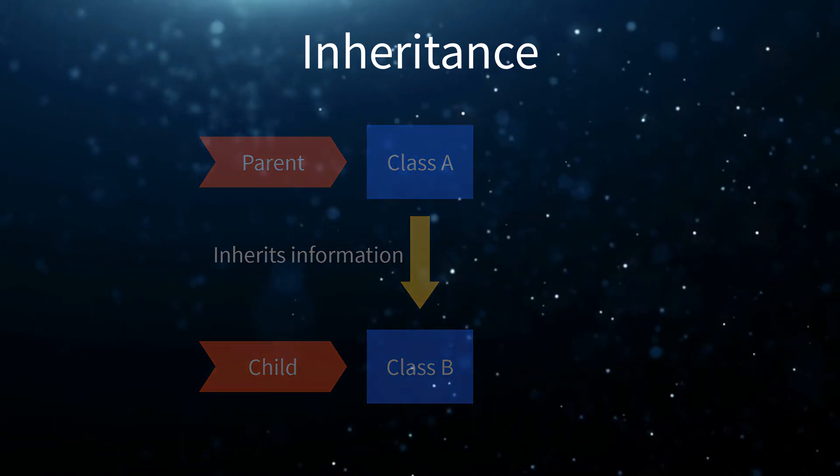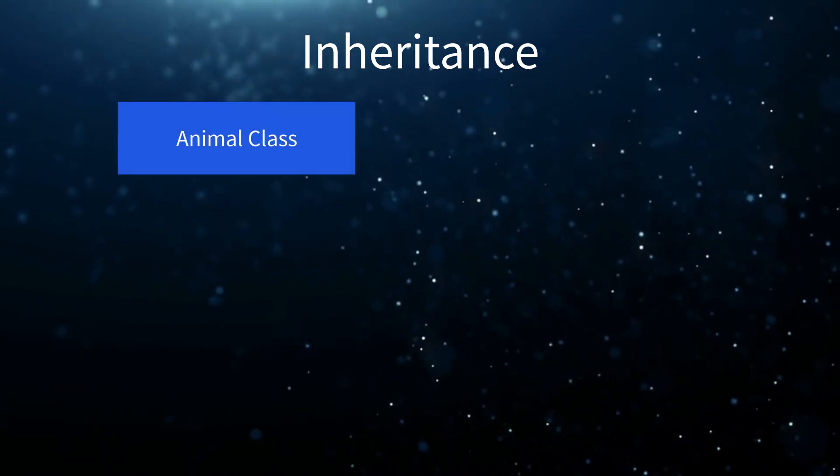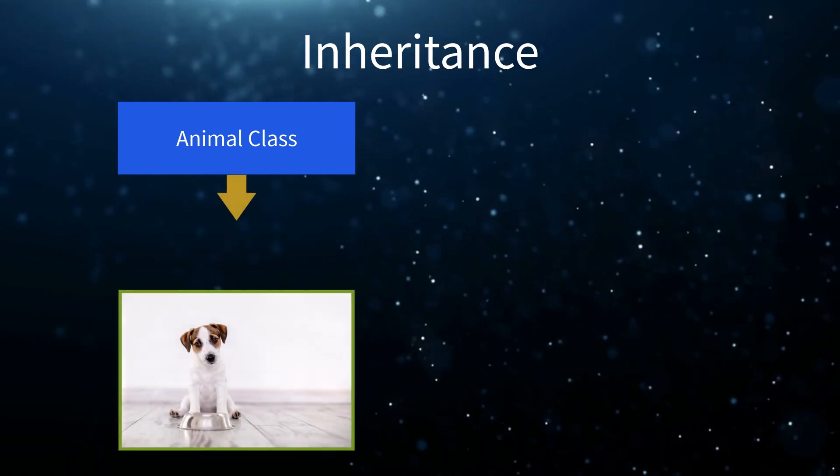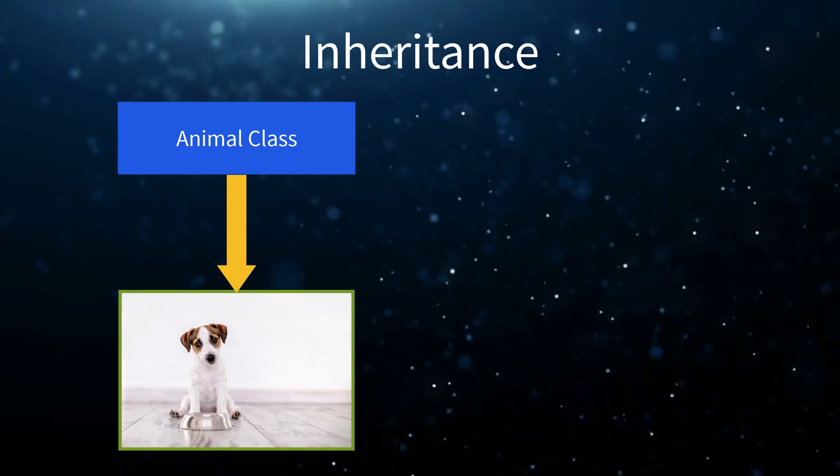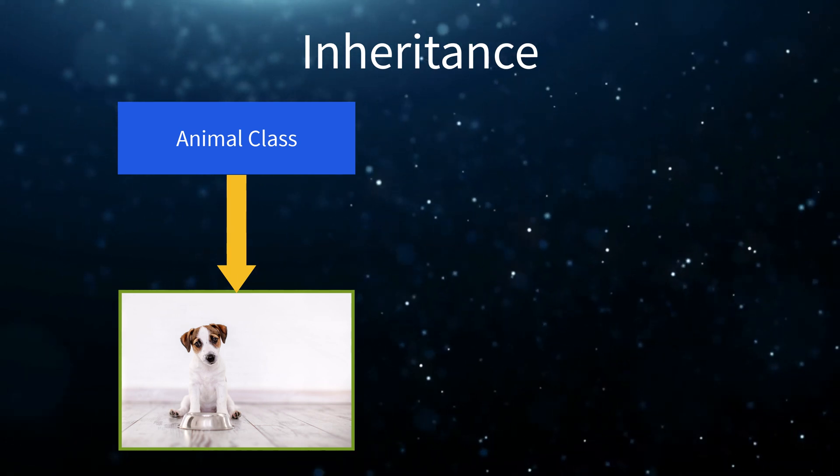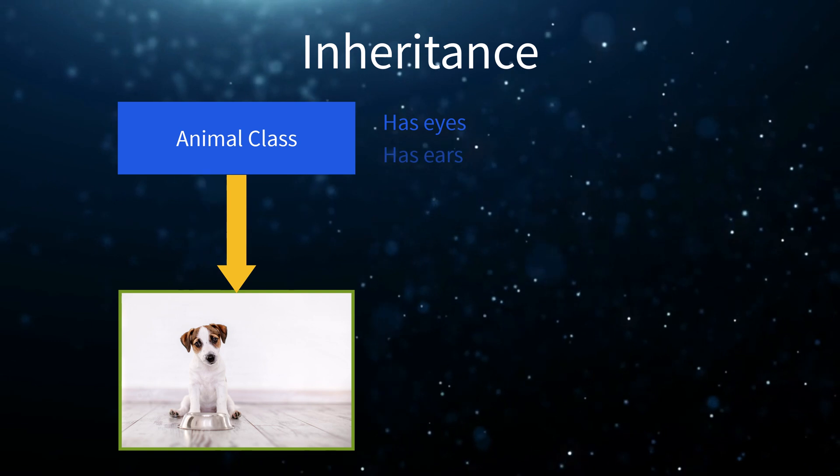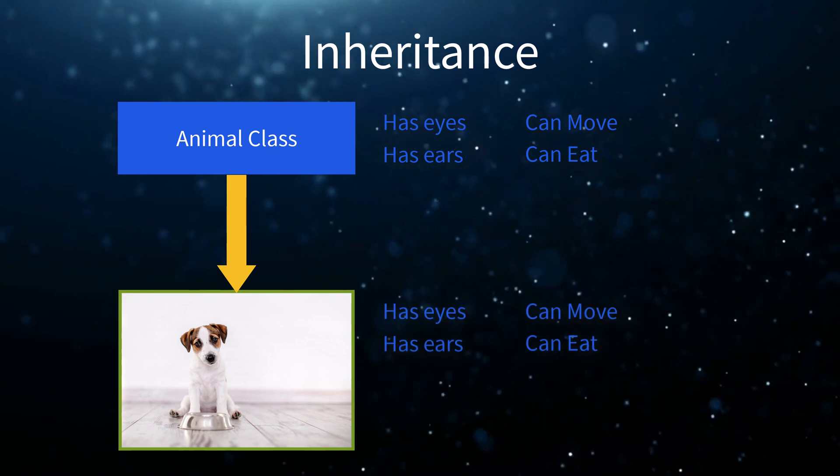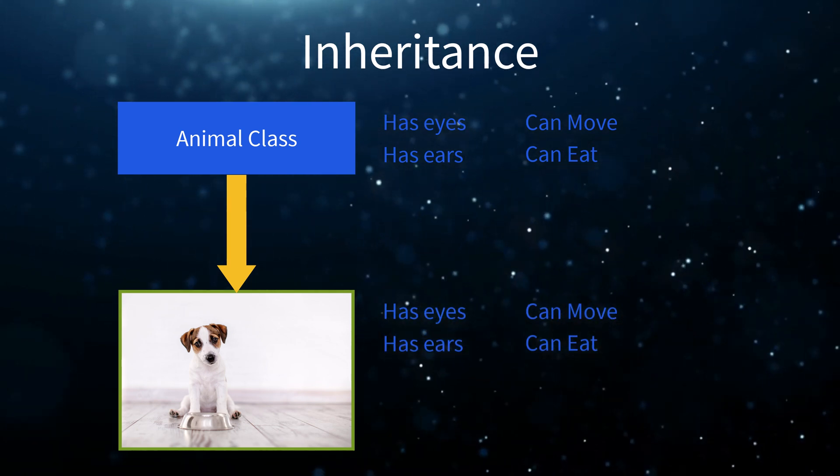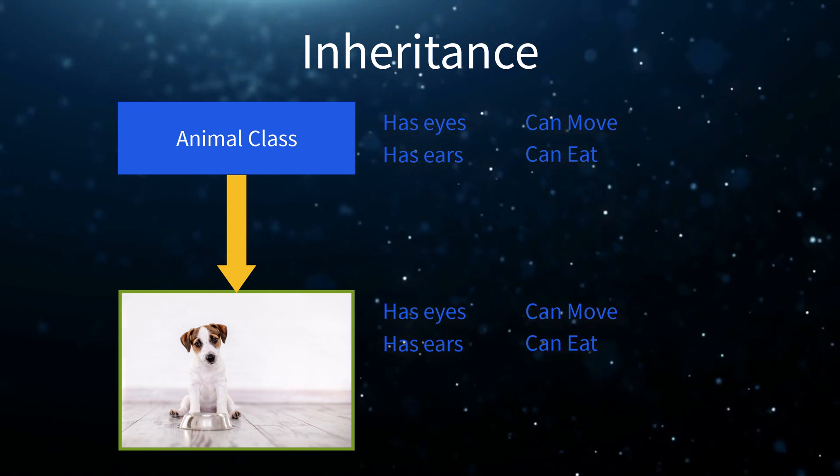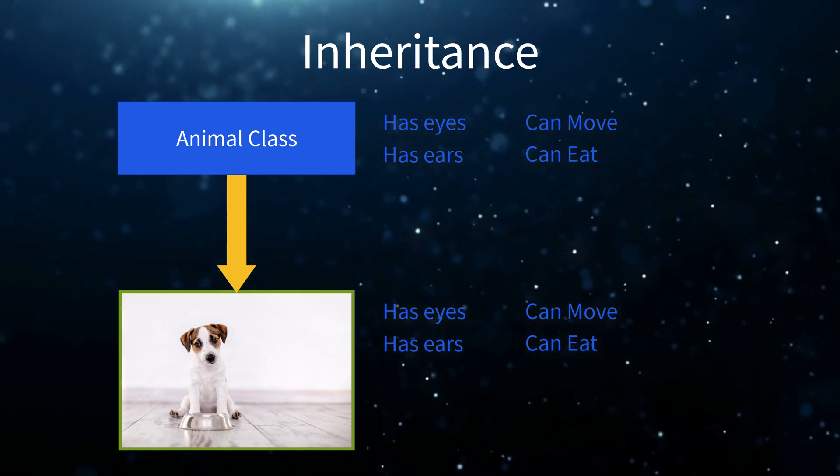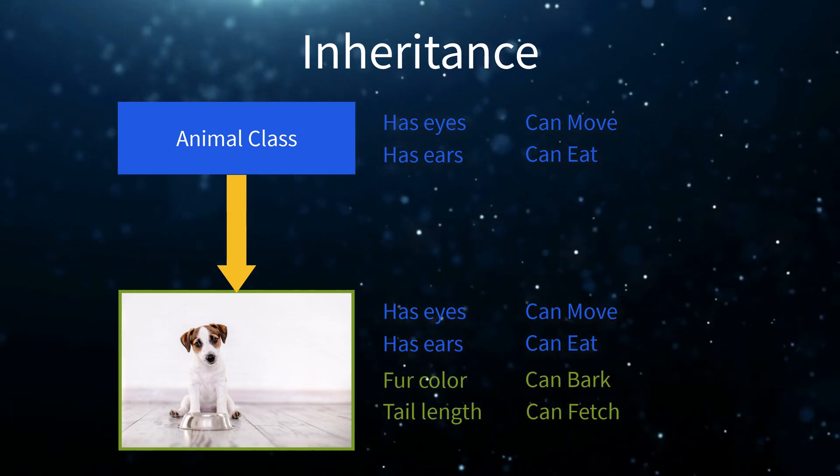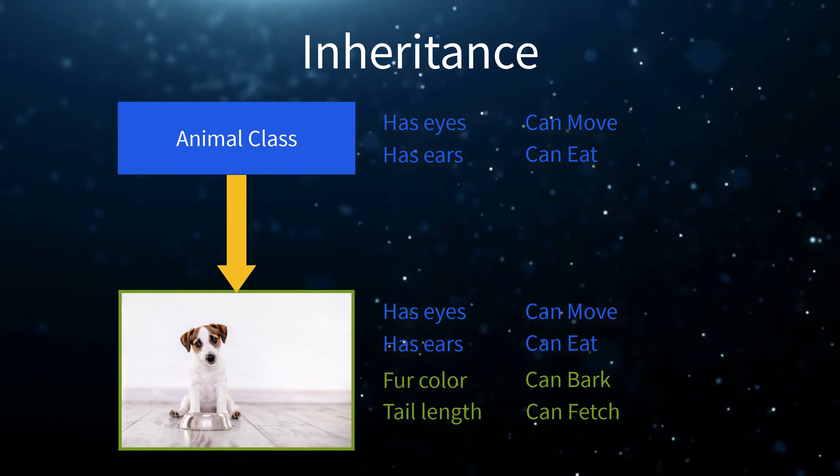For example, we could define an animal class. Then, we can create a child class from animal and call it dog. The animal class contains all the attributes and functionality common to all animals: has eyes, ears, can move, can eat, etc. The dog will inherit all those attributes, but in addition, we can add specific attributes or functionality that are only relevant to a dog. For example, the ability to bark. We can create as many parent and child classes as we want, effectively creating a hierarchy.